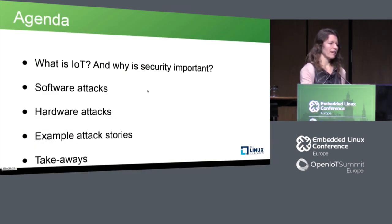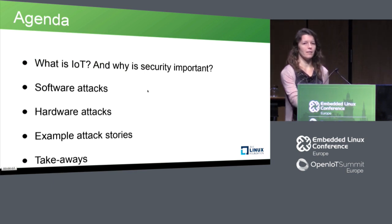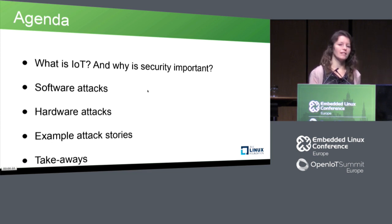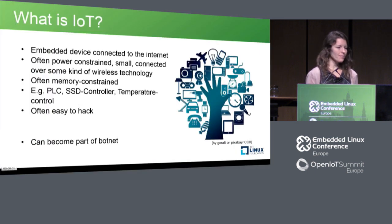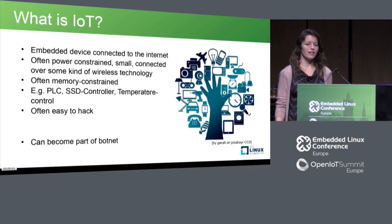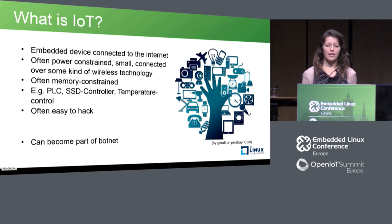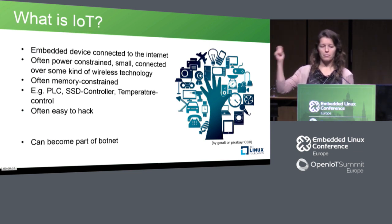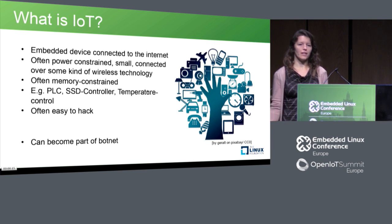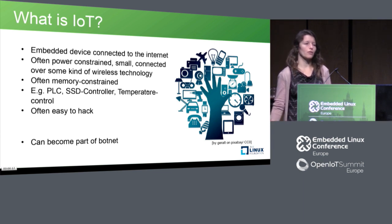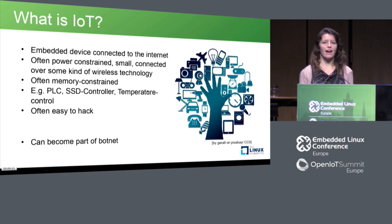So this is my agenda. In short, I will talk about software and hardware attacks and tell you some example attack stories I've seen in the last years. Let's start with what is IoT. IoT devices were traditionally more analog devices like your light bulb, your garage opener, or your baby monitor, which are now connected to a network. Often those devices are power constrained and memory constrained, and oftentimes less secure because you don't care about security — well, somebody hacked my IoT light bulb, why should I care?